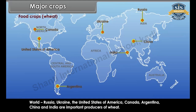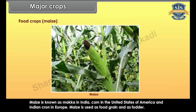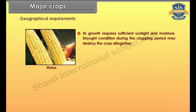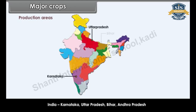Maize is known as makka in India, corn in the United States of America and Indian corn in Europe. Maize is used as food grain and as fodder. Its growth requires sufficient sunlight and moisture. Drought conditions during the cropping period may destroy the crop altogether. Stagnant water in the maize fields is harmful to plants. Production areas in India include Karnataka, Uttar Pradesh, Bihar and Andhra Pradesh.